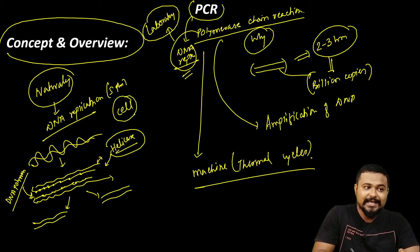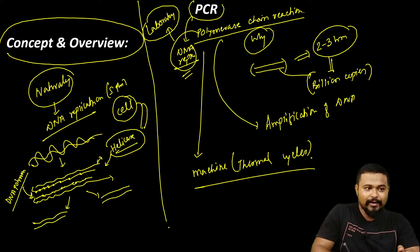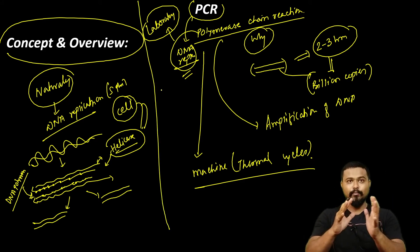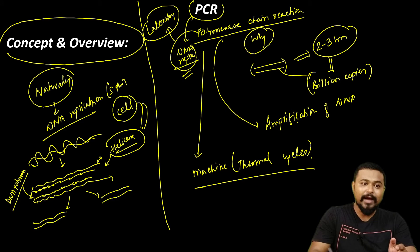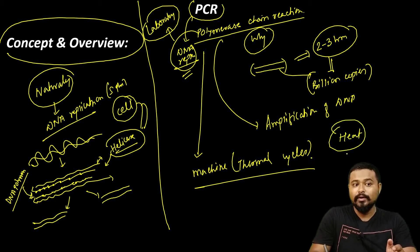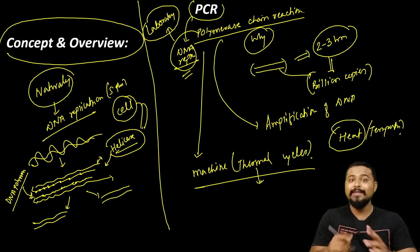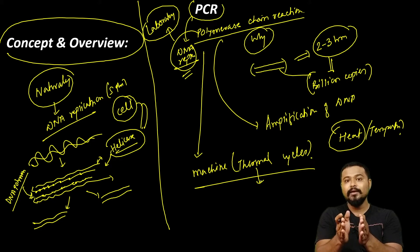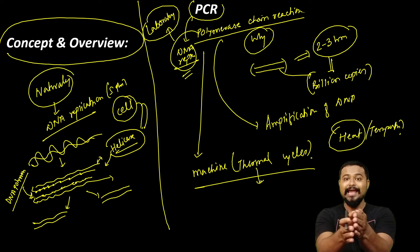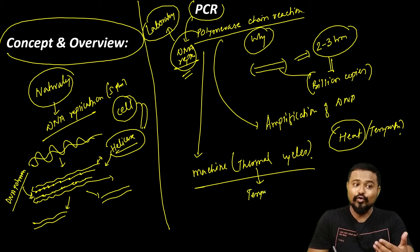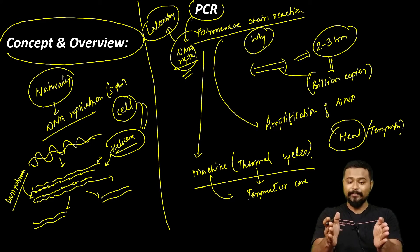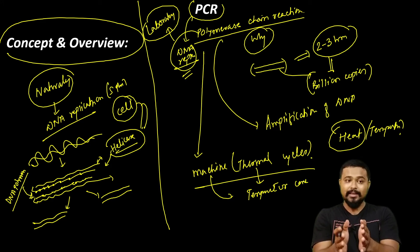In the cell, helicase is used to unwind the DNA. But in PCR, instead of helicase, we use heat — temperature. High temperature is applied using the Thermal Cycler to control the temperature and denature the DNA.